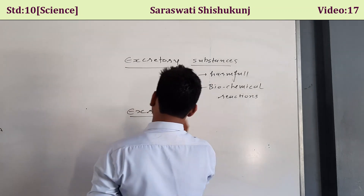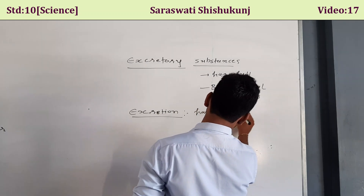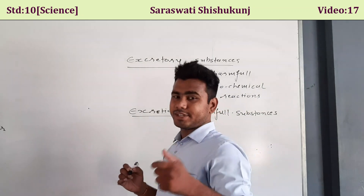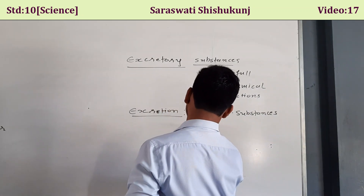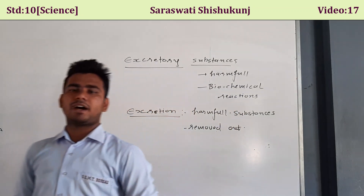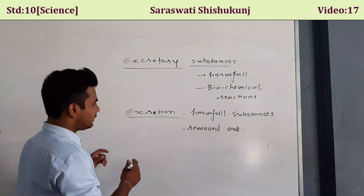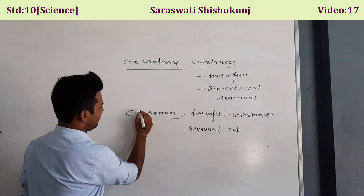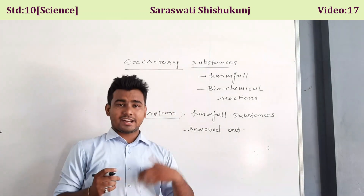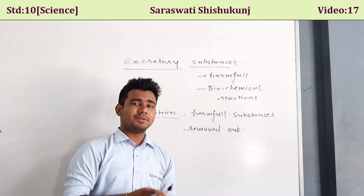In excretion, these harmful substances or excretory substances are removed out from our body. The excretory system in plants and in animals is different. In today's lecture, we are going to understand about the excretory system in human beings.